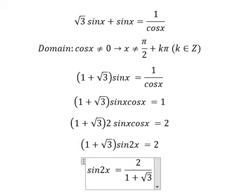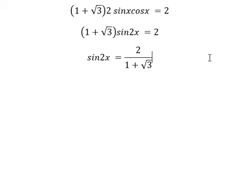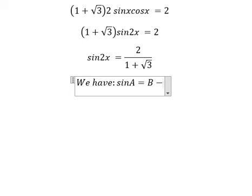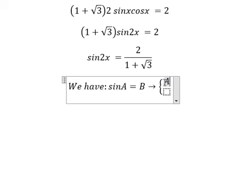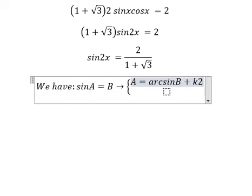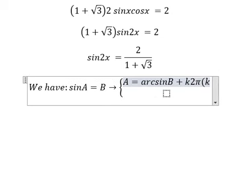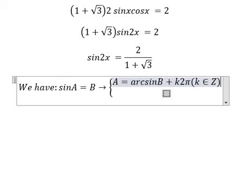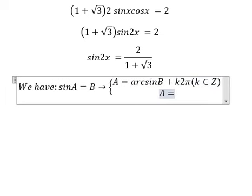So we have the formula in here that should be about A equals to arcsin B plus k2π, and k belongs to integers. And the second one, that is about π minus this one.